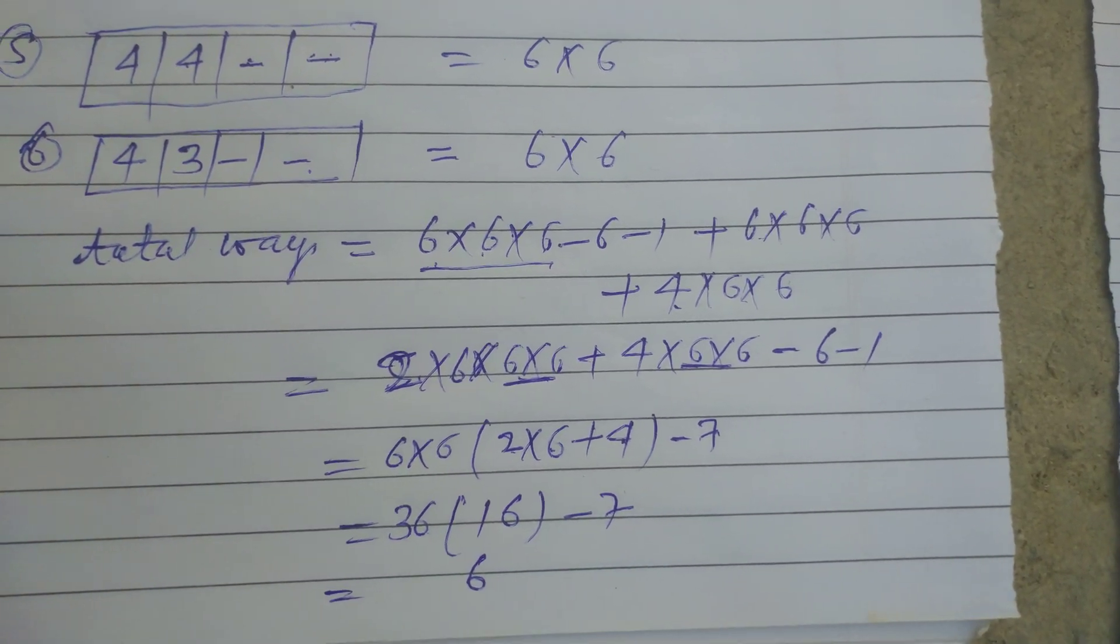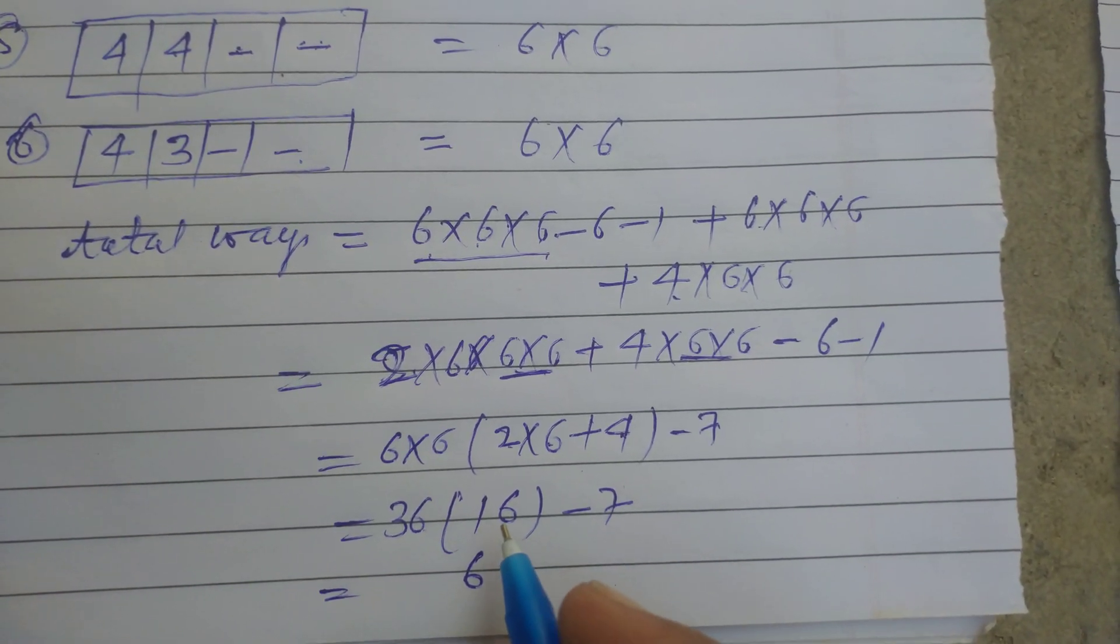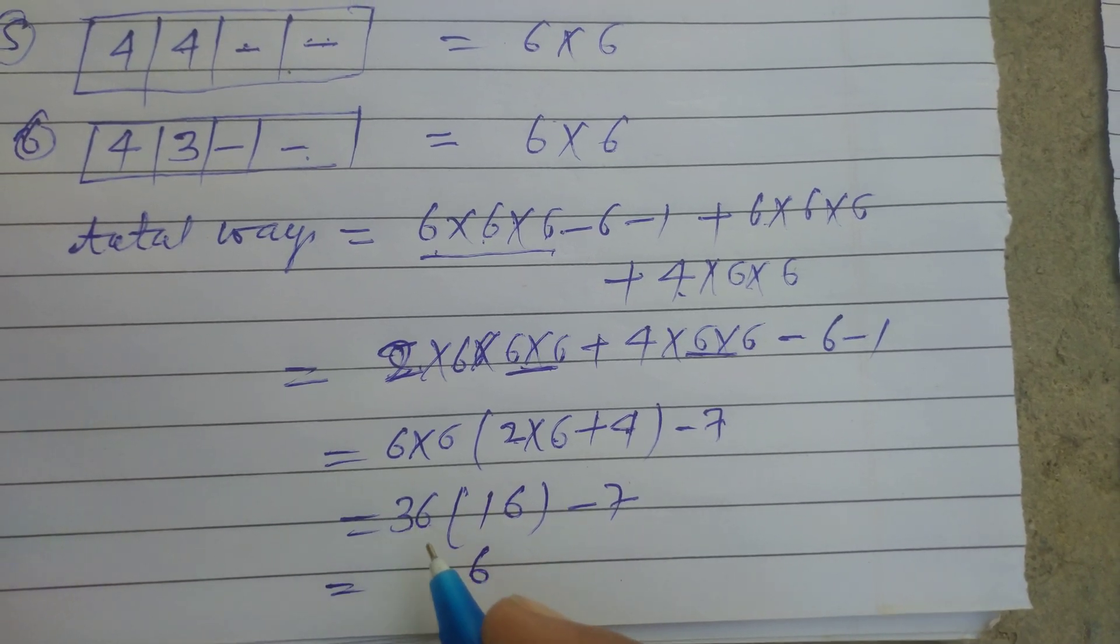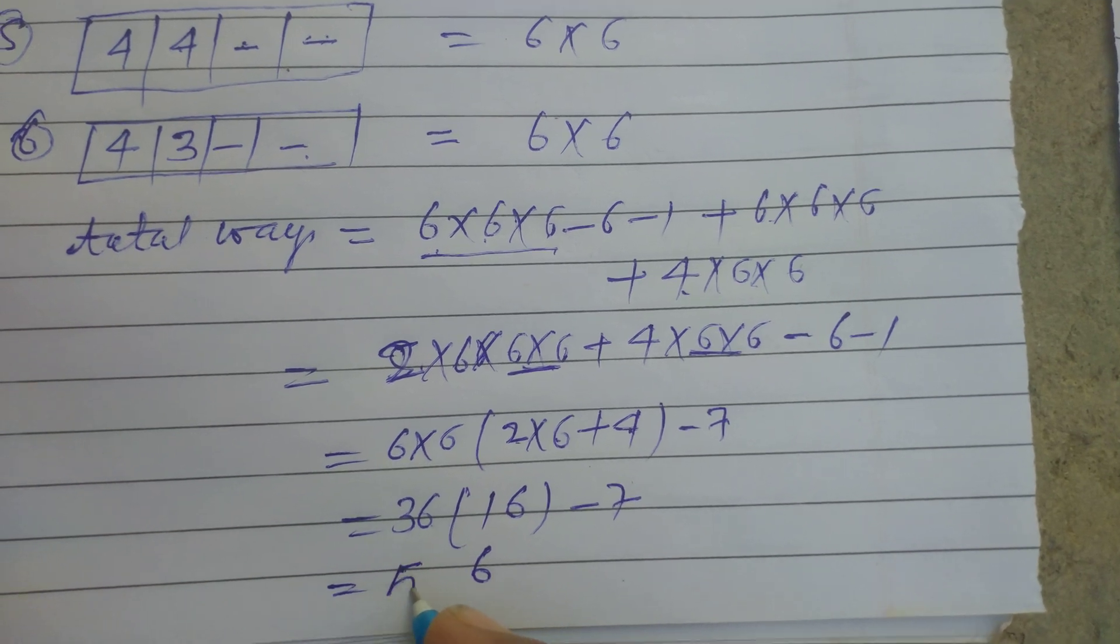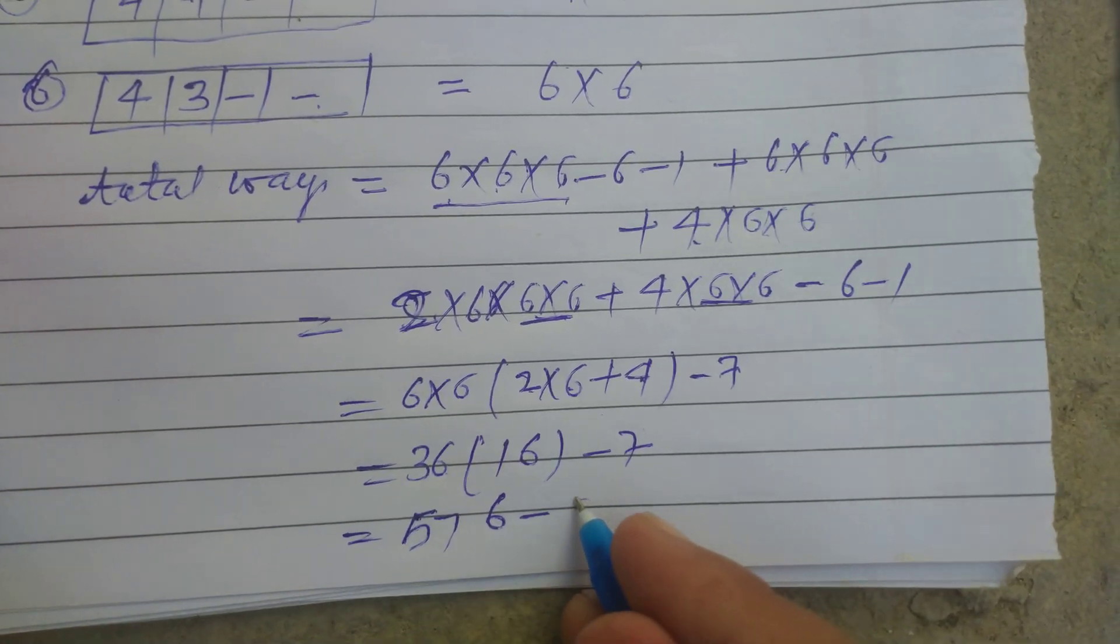16 into 6 is 96, so this is 6, carry 9, 16, 3, 4, 8, 48 plus 9 is 57, minus 7.